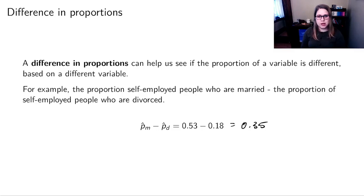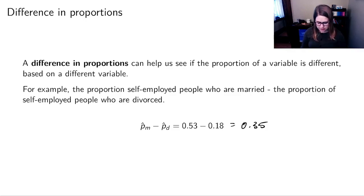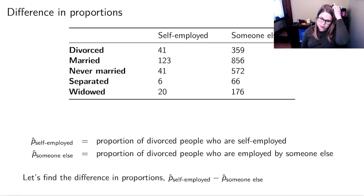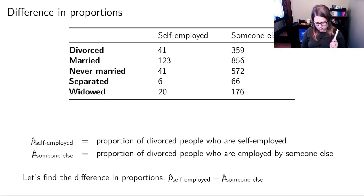Those two proportions seem pretty different from one another. As we go on in this course, we're going to learn how to use statistics to say if they're statistically different. Let's find another difference in proportions — the proportion of divorced people who are self-employed minus the proportion of divorced people who are employed by someone else — but I'll leave that one for synchronous class.